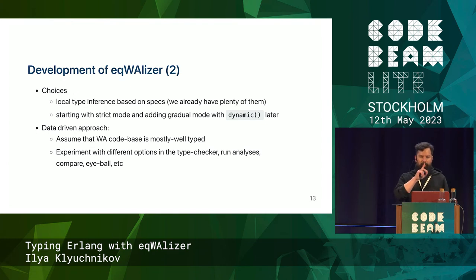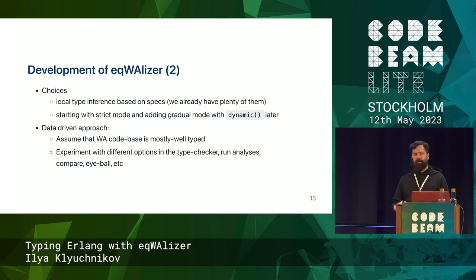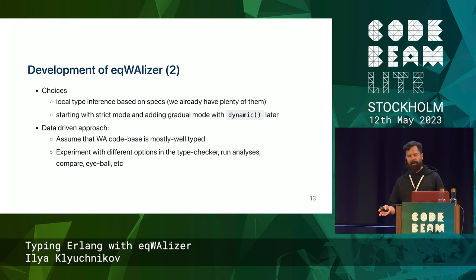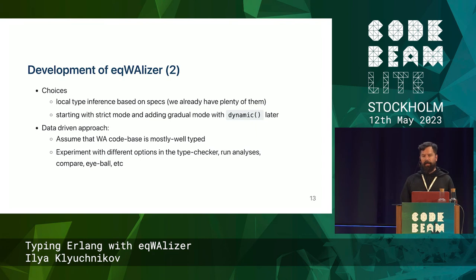From the very beginning we had two modes in our type checker. We had strict mode, which provides very strong guarantees but is more restrictive — migrating to strict mode may require a lot of refactoring and rewrites, so it may not be suitable out of the box. We also have gradual mode with the Dynamic type, which we actually implemented a little bit later.